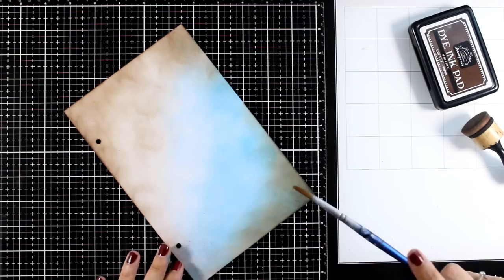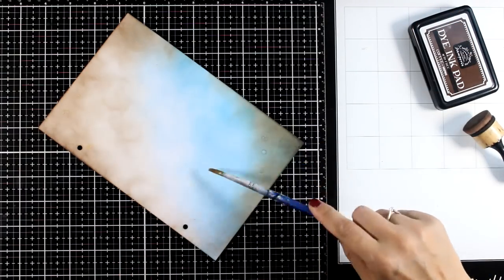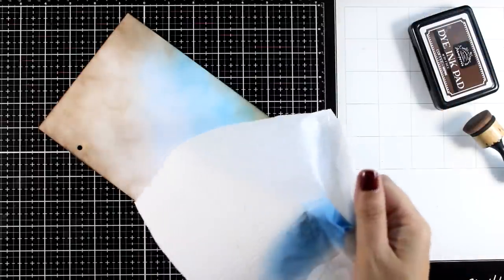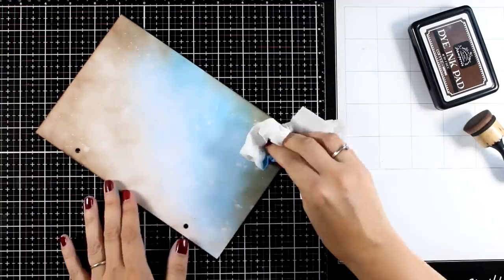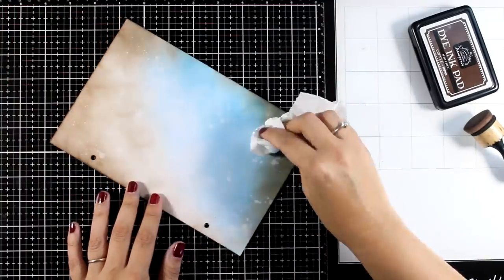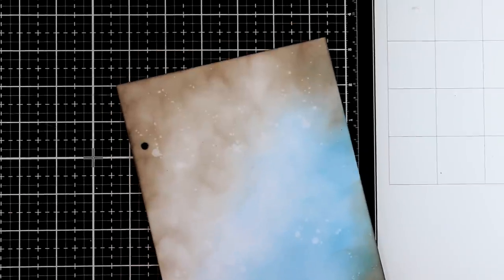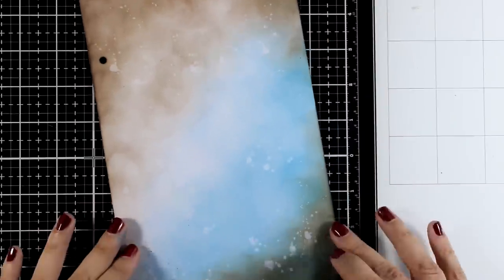Step two, add some water splashes all over the place. Remember dye ink reacts with water so I can use a paper towel and blot the excess water and you can see those splashes that appear on the page. Of course the darker the color or the more saturated it is, the more you will be able to see the effect of the splatters.